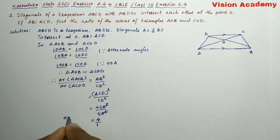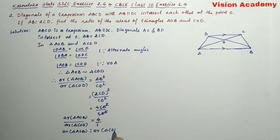This is area of triangle AOB divided by area of triangle COD. This can also be written as area of triangle AOB is to area of triangle COD is equal to 4 is to 1.